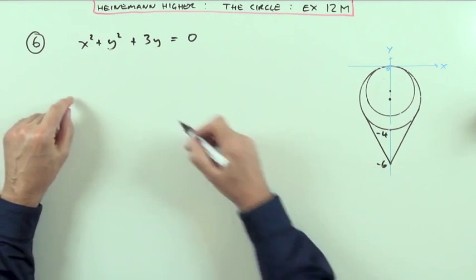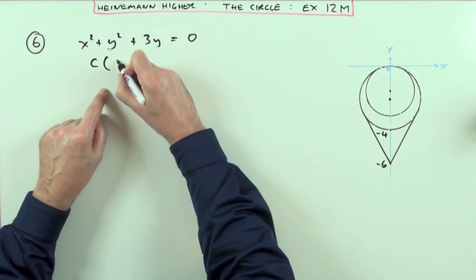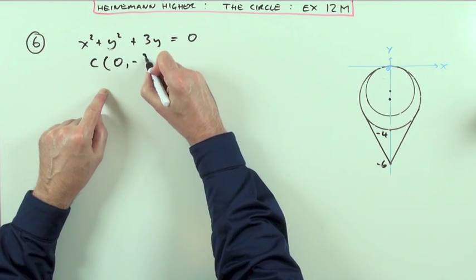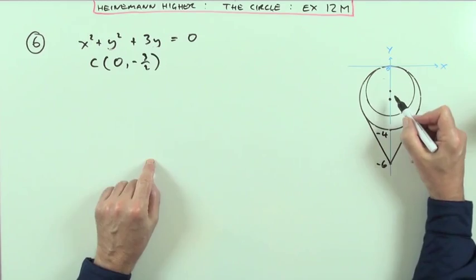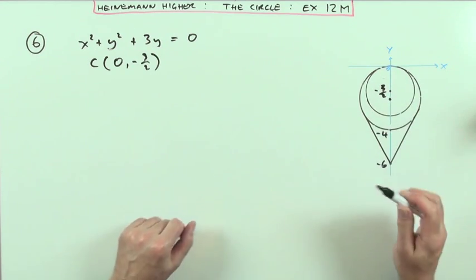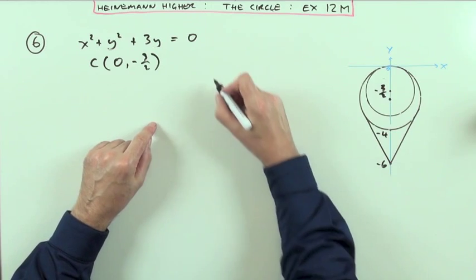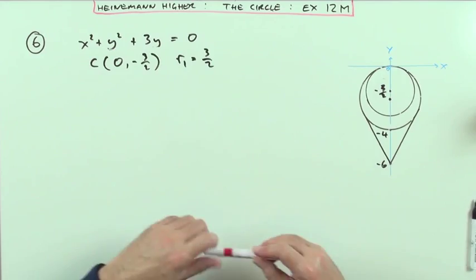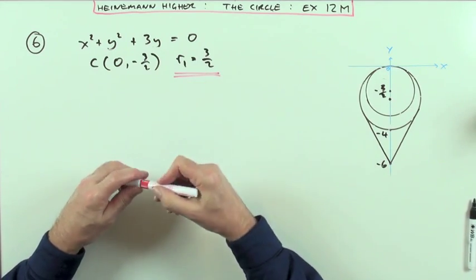Well, first of all, if that's the equation of the inner one, I can get its center straight away. There's no x term, so it must be zero, and half of that, so it's negative 3 upon 2. So the center is at negative 3 upon 2, which means its radius must be 3 upon 2 without even putting it into the formula. So the radius of the small one is going to be 3 upon 2 units, and that's one of them done, so I can work out its circumference.